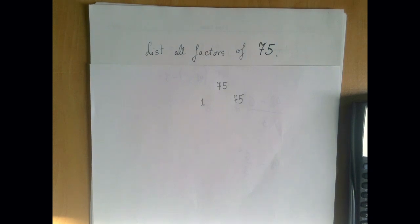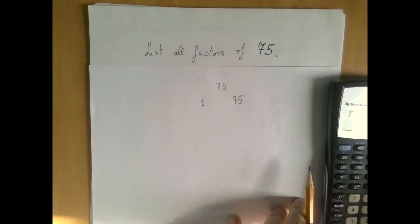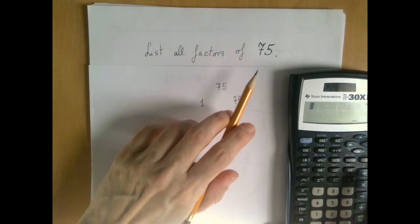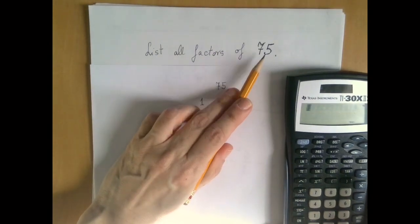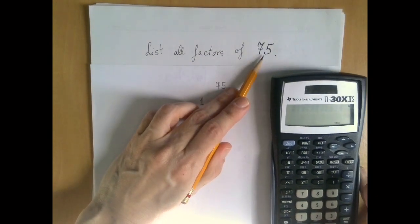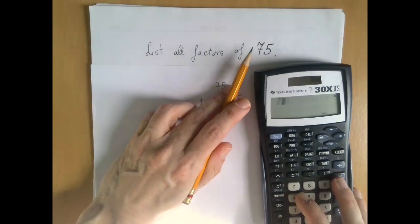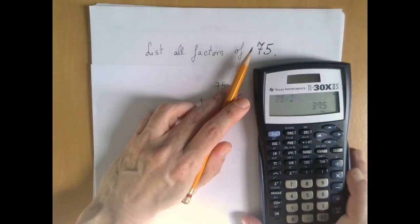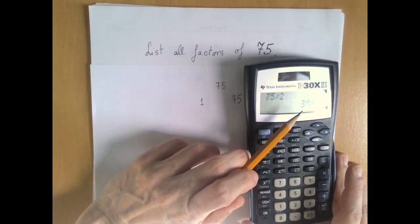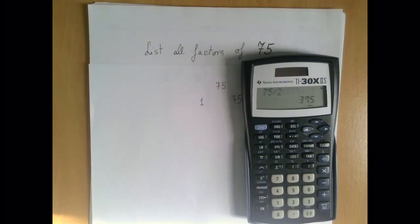After that we roll up to 2. 75 is not divisible by 2, that is the same as saying it's not even. There is a divisibility test: if the last digit is not even, if the last digit is not divisible by 2, neither is the number. But we can also check with the calculator. If we divide by 2, we do not get a whole number, so 2 is not a factor.